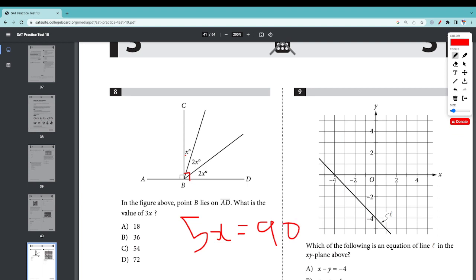If we divide both sides by 5, we get x equals 18, but this asks 3 times x. 18, so 3 times 18 is 54. The answer is C.